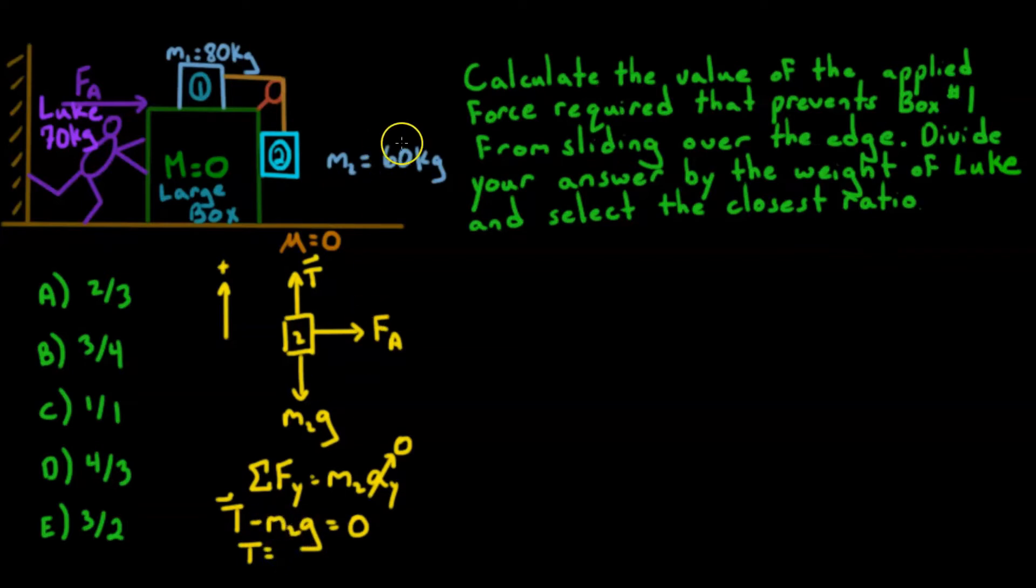So solving for tension, m2 is 60 kilograms, so it's going to be 60 times g, which for Earth is 9.81, but I'm going to just leave it as 60g for now. Let's look at another free body diagram.